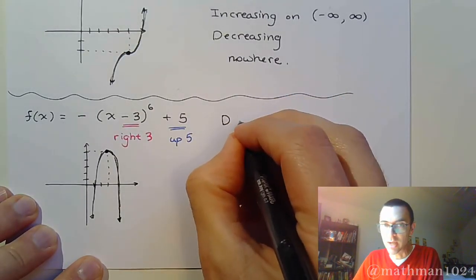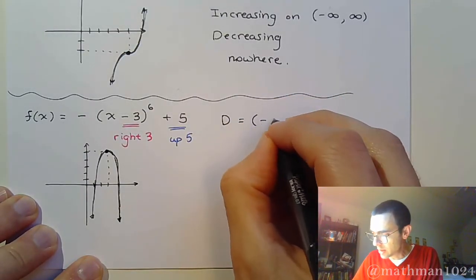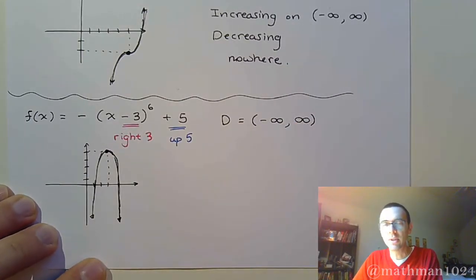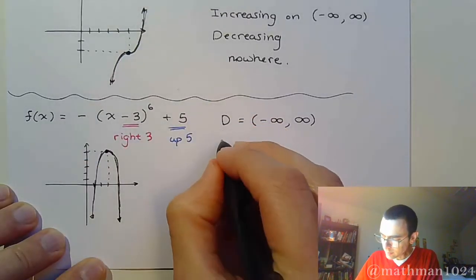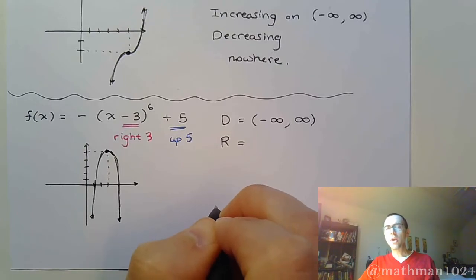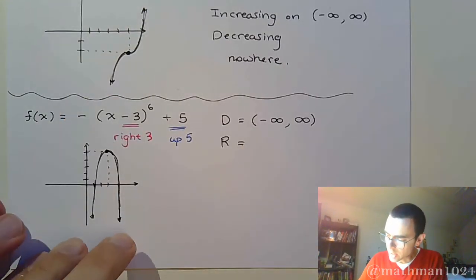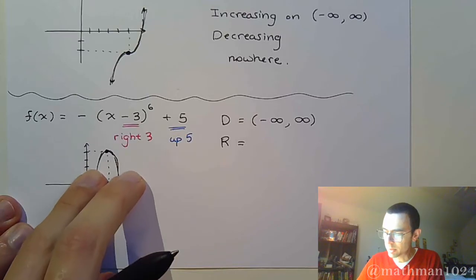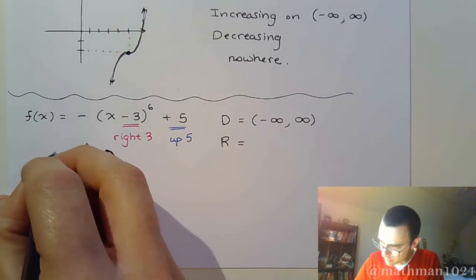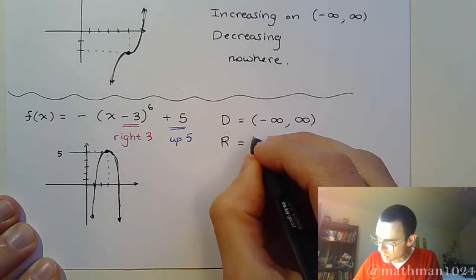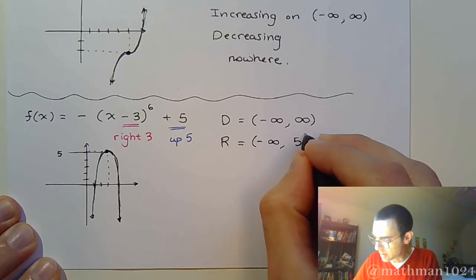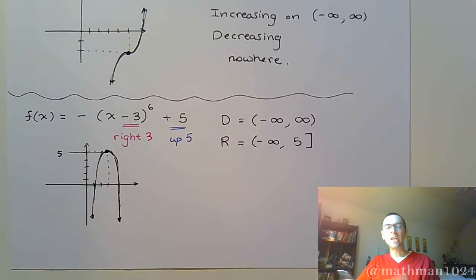First of all, the easy one: the domain for all polynomial functions is negative infinity to infinity. Your range — this is where I use the picture. The range is bottom to top. This graph comes from negative infinity and goes all the way up to a y-value of 5. That's the peak right there when y equals 5. So the range is from negative infinity up to 5, including 5 because that is a point we are reaching.